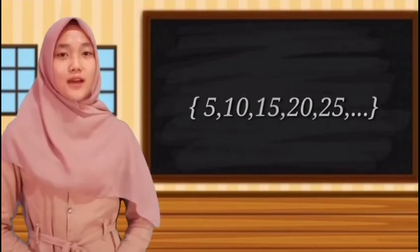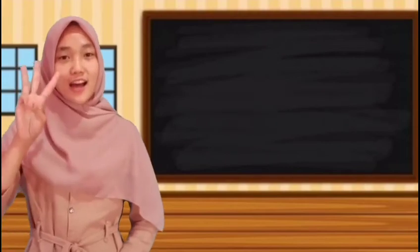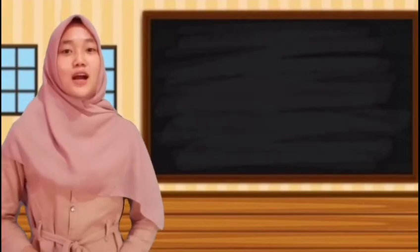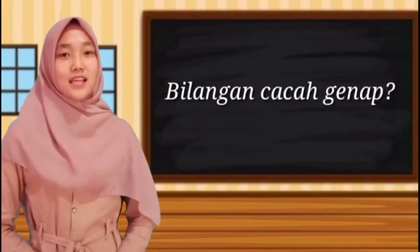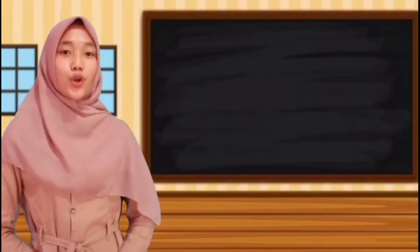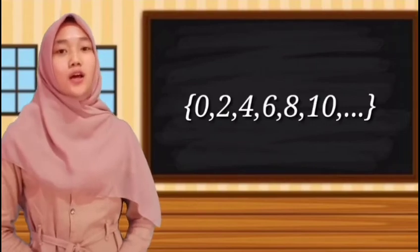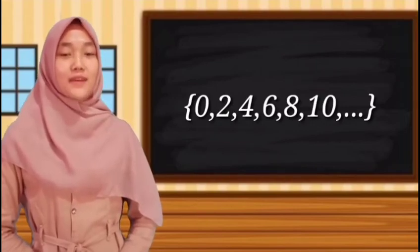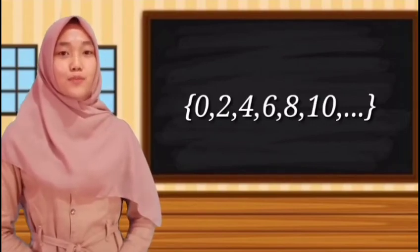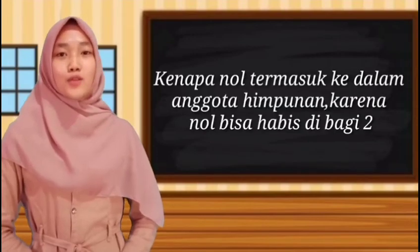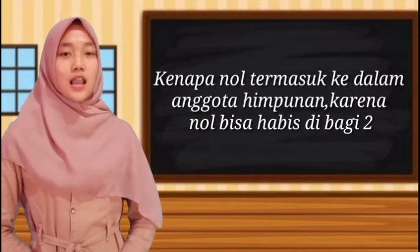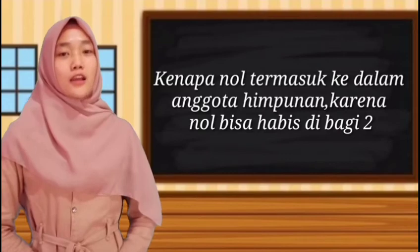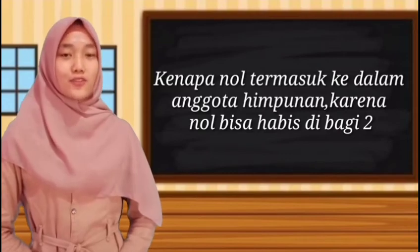Contoh yang ketiga yaitu bilangan cacah genap yaitu 0, 2, 4, 6, 8, 10, dan seterusnya. Kenapa 0 termasuk ke dalam anggota himpunan? Karena 0 bisa habis dibagi 2.